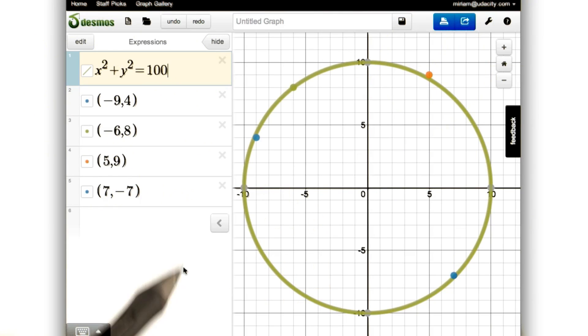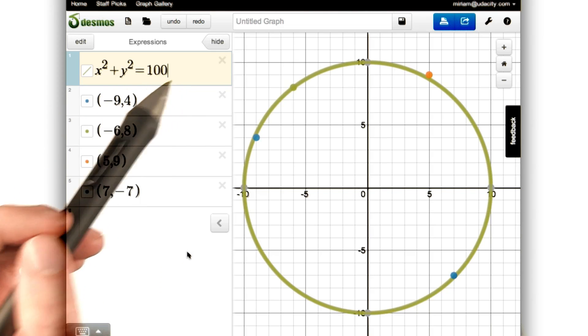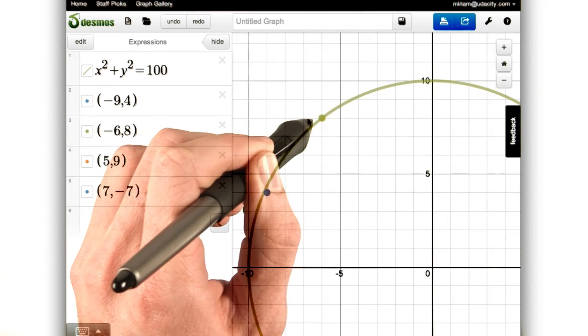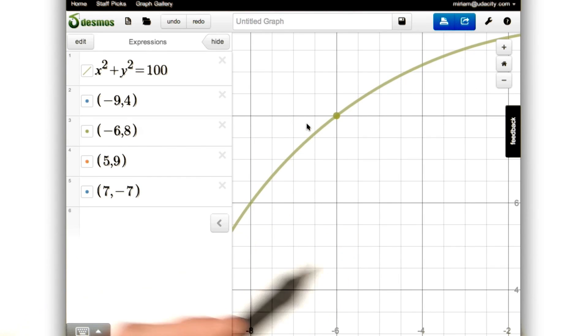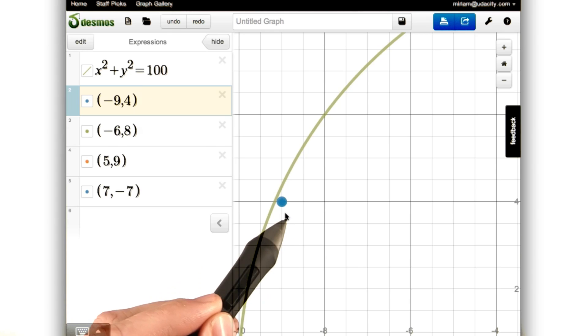We can even see this on Desmos. Here's the equation of our circle, and we can see that the point (-6, 8) is on it. Even if we zoom in, we can quickly see that yes, the point is on the circle. And then this other point, (-9, 4), isn't. It's just shy of our circle.